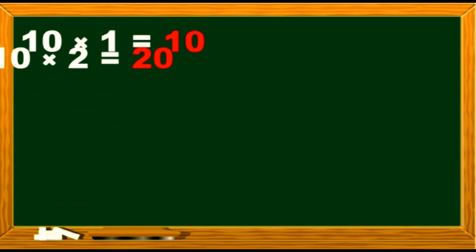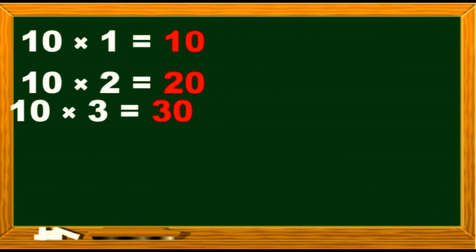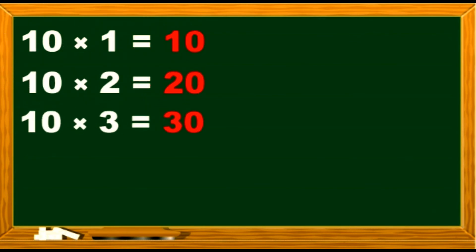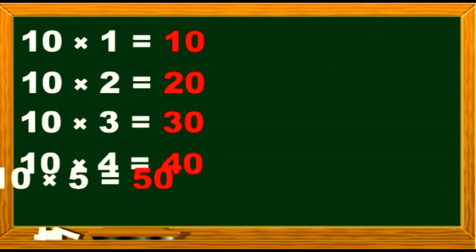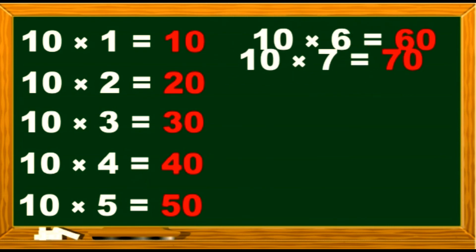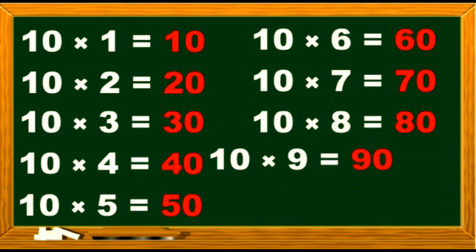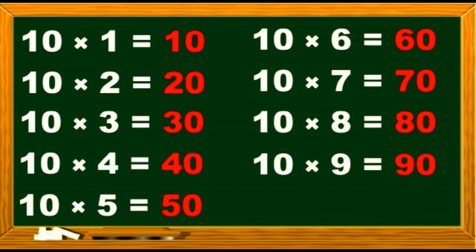10 1s are 10. 10 2s are 20. 10 3s are 30. 10 4s are 40. 10 5s are 50. 10 6s are 60. 10 7s are 70. 10 8s are 80. 10 9s are 90. 10 10s are 100.